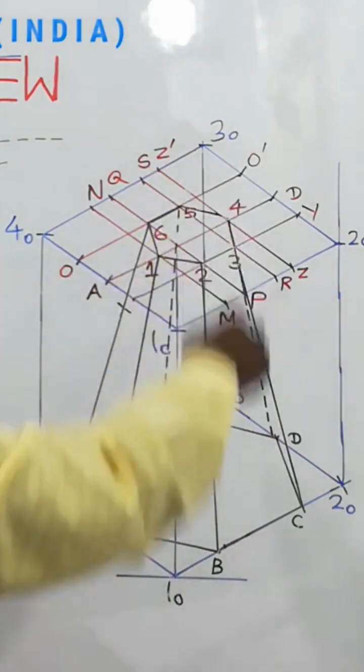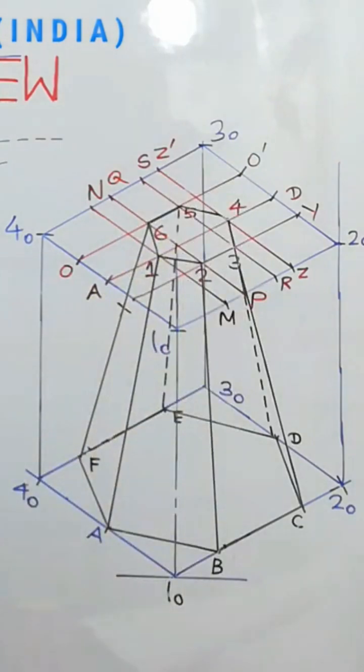Get the diagram called frustum of an isogonal pyramid. That's what's asked in the question. So you also practice and get the correct diagram.